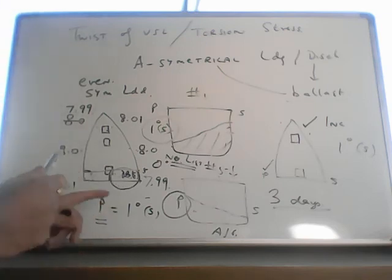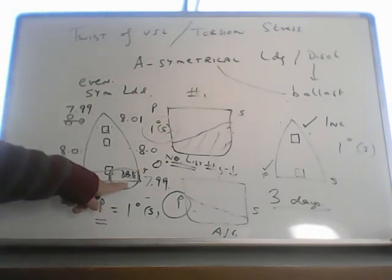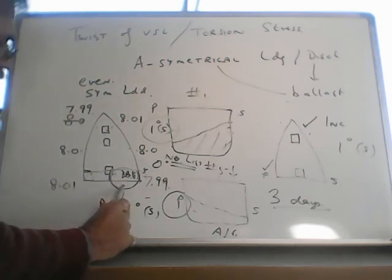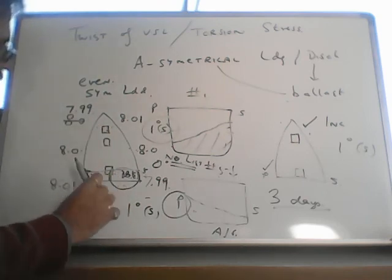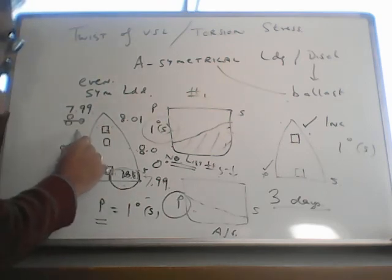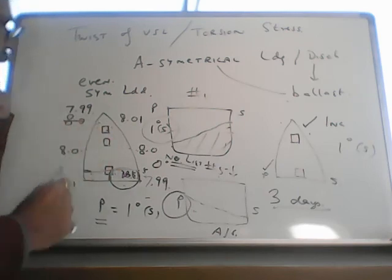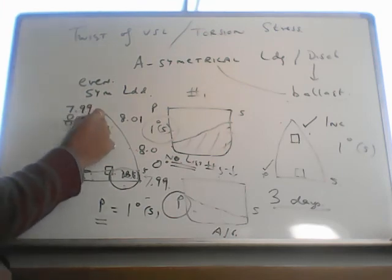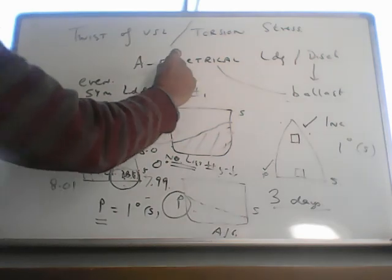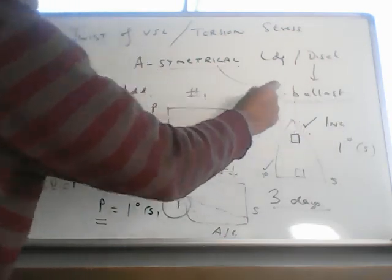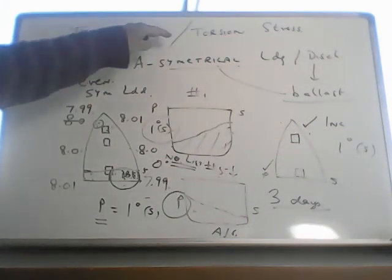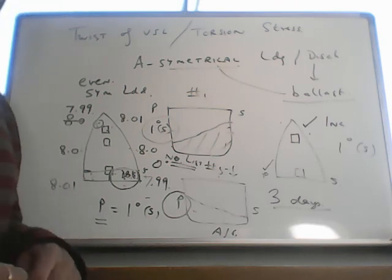And since they de-ballast this, you have a port list, vessel gets port listed. To correct that list, they de-ballast the other side, number 1 db, number 1 port gets de-ballasted. So this is also asymmetrical ballast. And the same thing happens, twisting of the vessel which is not permitted.